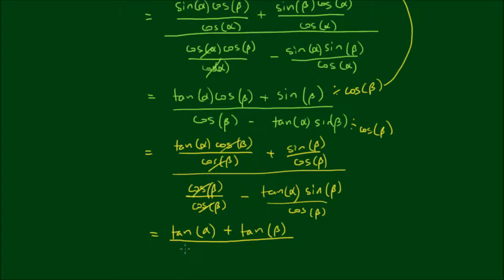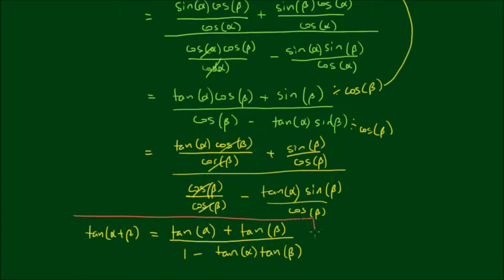This term cancels out to become 1, minus tan of alpha remains, and sin beta divided by cos beta equals tan beta. So the identity of tan of alpha plus beta is equal to tan alpha plus tan beta, all over 1 minus tan alpha times tan beta.